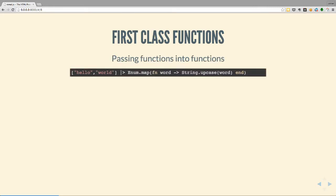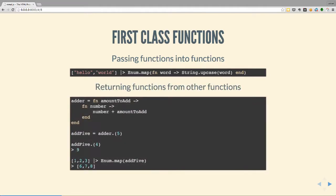Pretty much the first part of the definition of a functional language is first-class functions - you can pass a function into another function like a value. In this example, we've got a list with two things - hello, world - we pipe that into a map function, and the other parameter is a lambda function: the word goes in, it runs string uppercase on it. You can also return functions from other functions. We've got an adder function that accepts an amount to add and returns a function which takes a number and adds it. Call adder with five and you get add-five.